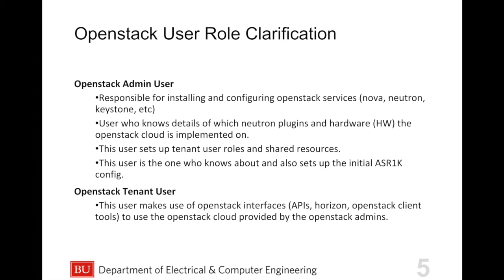OpenStack has different roles in the Neutron environment. First is the OpenStack admin user, which is responsible for installing and configuring OpenStack services — Nova, Neutron, and Keystone. This user knows details about which Neutron plugins and hardware the OpenStack cloud is implemented on, sets up tenant user roles and shared resources, and also sets up the initial ASR1K config.